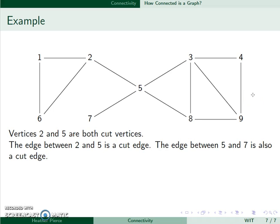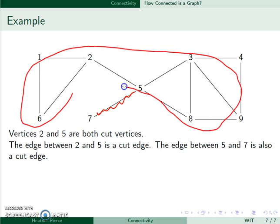In addition, if I remove the edge between 5 and 7, I will have this entire graph here, and I will also have the isolated vertex 7, so that is also a cut edge.